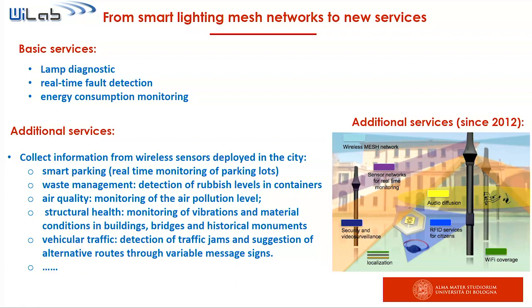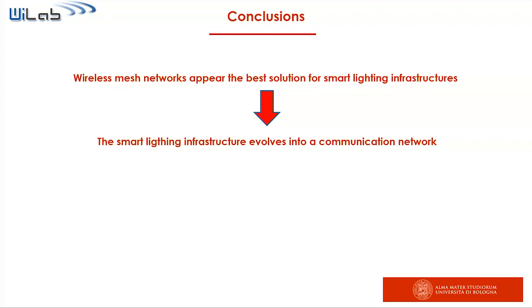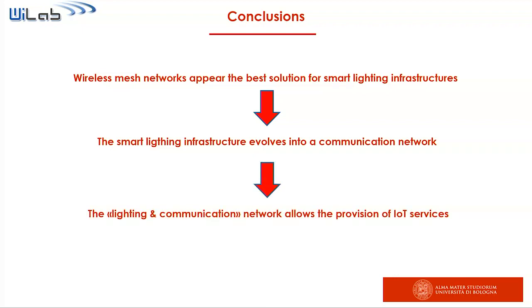The last point: once you have a wireless network deployed across the city, you can use the same network to provide additional services. You can collect information from wireless sensors — detecting rubbish levels and performing waste management, monitoring air quality, implementing smart parking service, and so on. In a few words, you can implement IoT services. To conclude, wireless mesh networks appear to be the best solution for smart light infrastructure. The smart light infrastructure evolves into a communication network, and once you have a wireless communication network in the city, you can also provide additional IoT services.